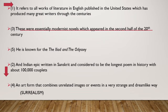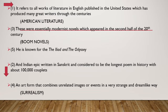For across number 1: it refers to all works of literature in English published in the United States, which has produced many great writers through the centuries. The answer is American Literature. For number 3 across: these were essentially modernist novels which appeared in the second half of the 20th century. The answer is Boom Novels. And across number 5: he is known for the Iliad and the Odyssey. That is Homer.